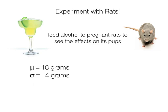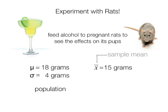All this data on the left-hand side, this is about the population, again baby rats whose mommies didn't drink alcohol. The sample mean is 15 grams with a sample size of 16.